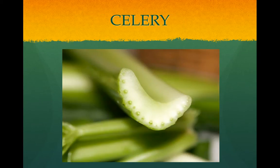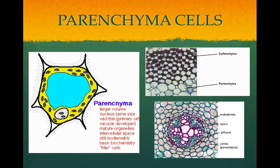There are three major different types of plant cells. The first is the parenchyma cells. They are the most abundant. They have thin primary cell walls only. They have a variety of functions, like food storage, photosynthesis, and cellular respiration. They usually divide and differentiate into other cell types.